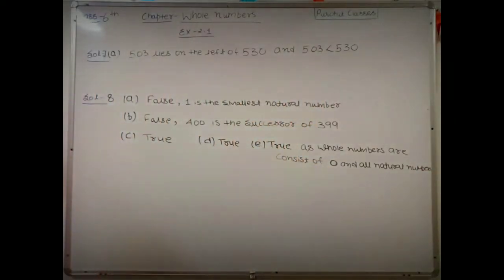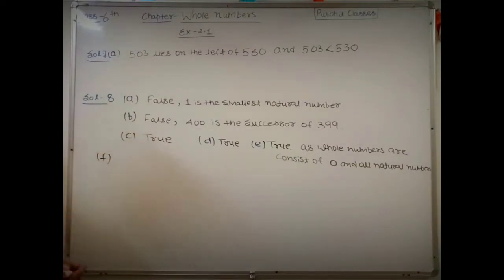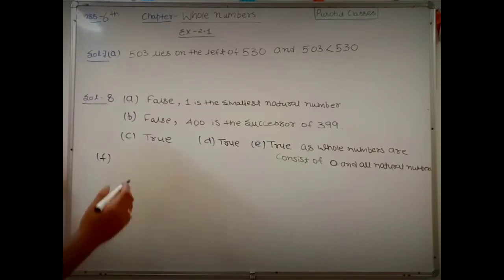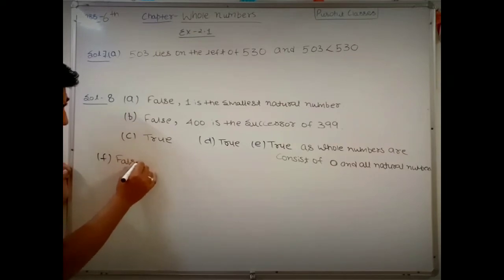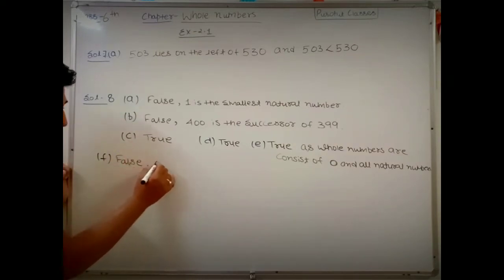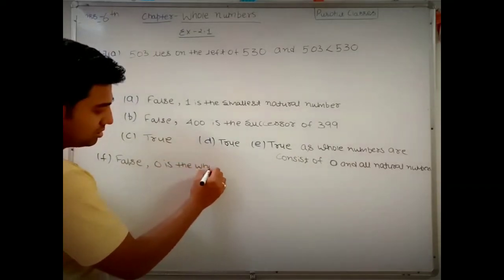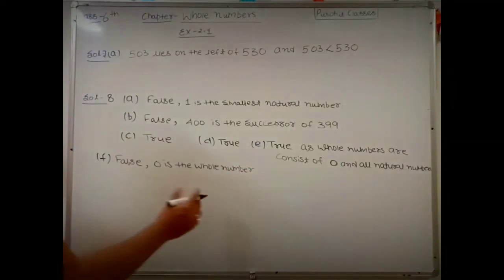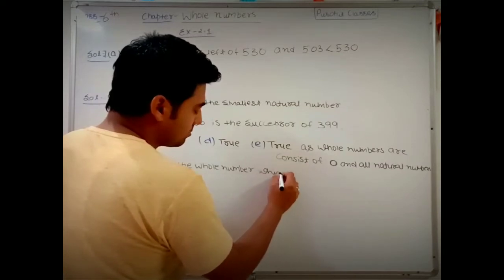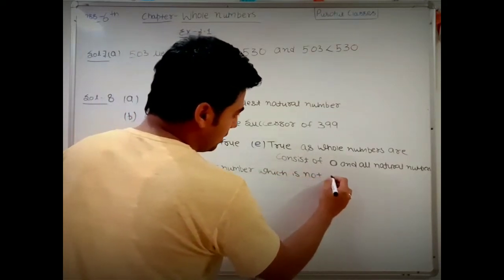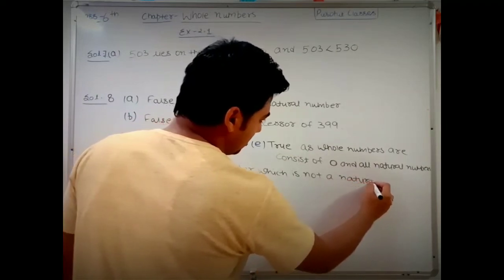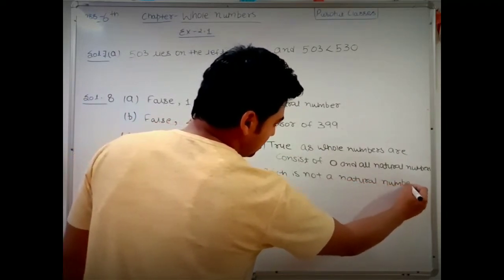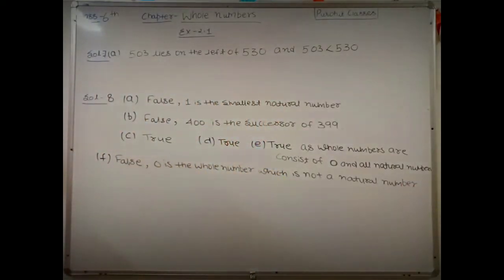Part f says: all whole numbers are natural numbers. This is absolutely false. The reason is that zero is a whole number but zero is not a natural number, since natural numbers start from 1. So zero is a whole number which is not a natural number.